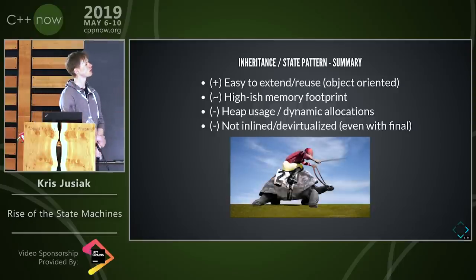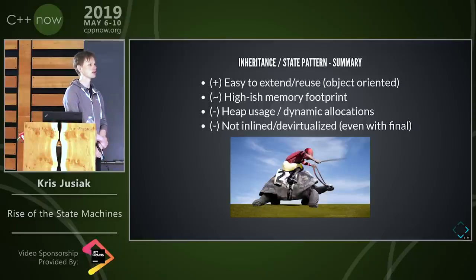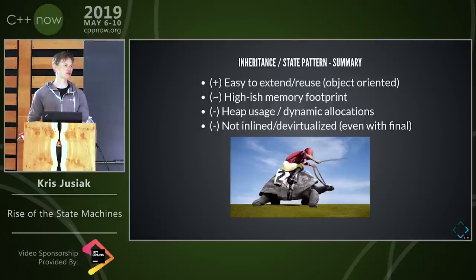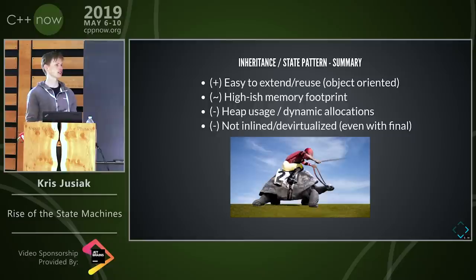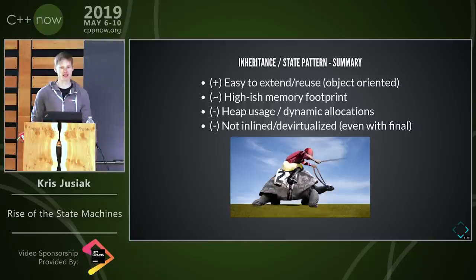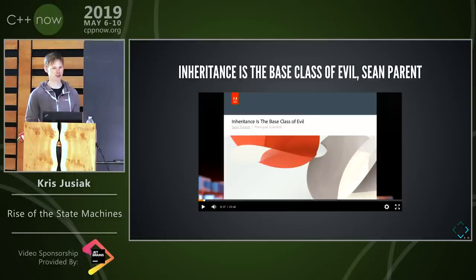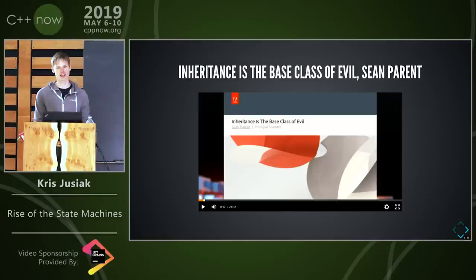The good part is that we can easily extend our state machines — we don't have to change all the code, we can do it from the state perspective. But we have heap allocations and we're not inlined. A comment from the audience: it's easier to add states but not events — that's totally true. All in all it's sluggish and Java-ish — maybe the best Java-style C++ but not modern C++. It uses inheritance, and as always, inheritance is the base class of evil.